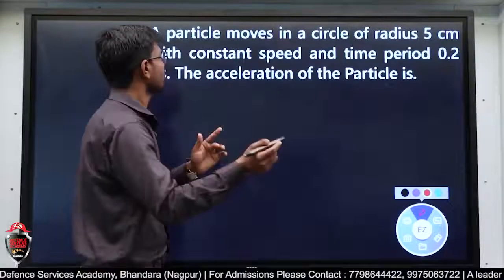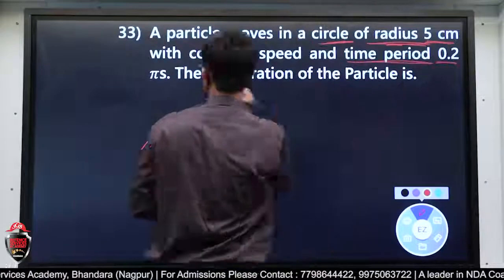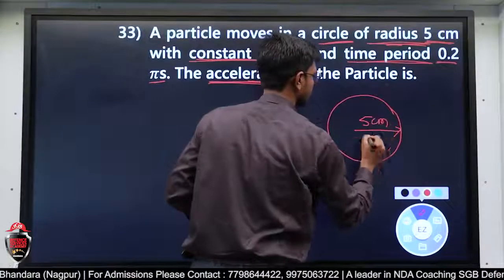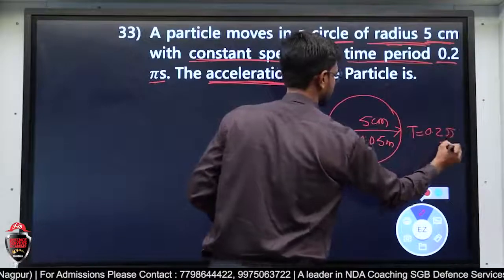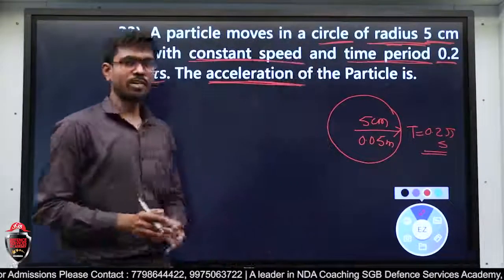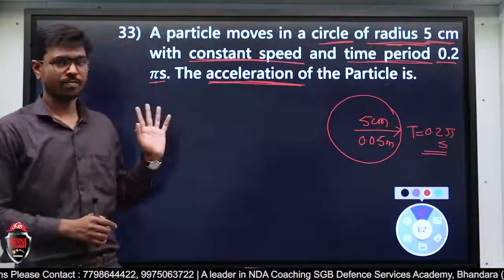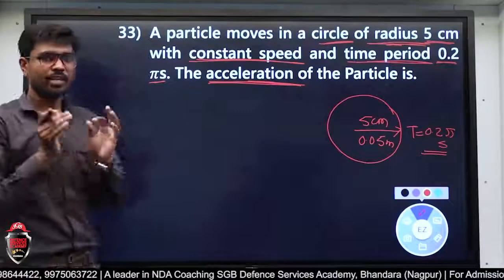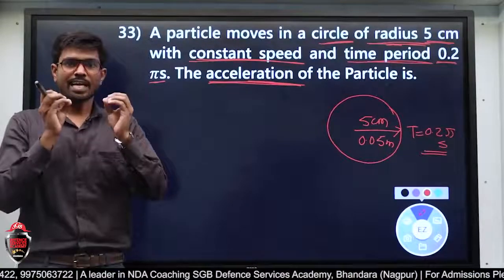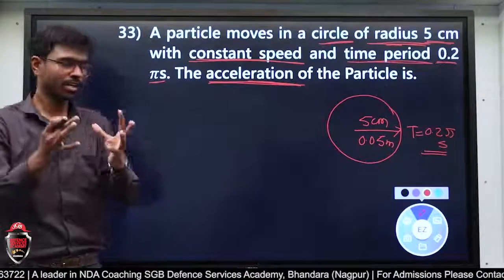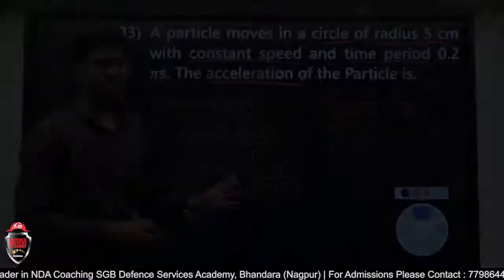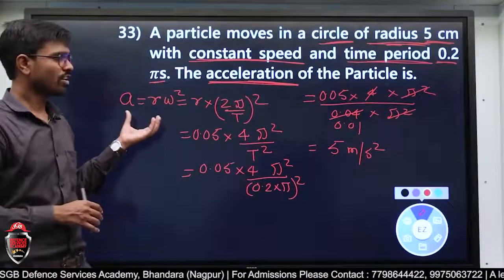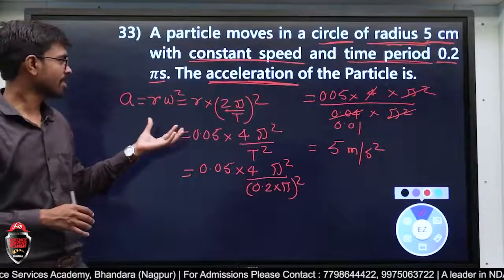Question में से given data: radius और time period दिया है। मुझे acceleration निकालना है particle का। Acceleration का formula r·ω² है। तो r × (2π/T)² — omega = 2π/T यह formula है omega का, और = 2πn, जहाँ n frequency है।